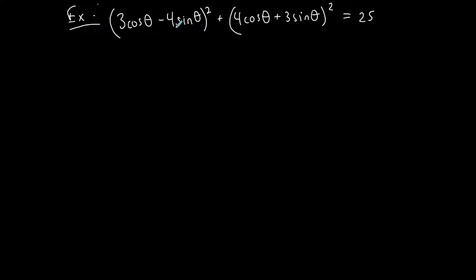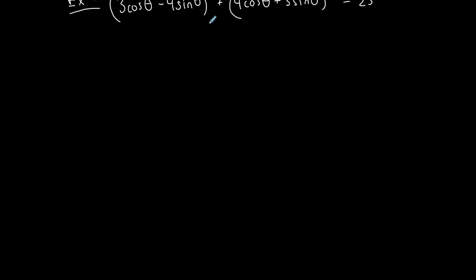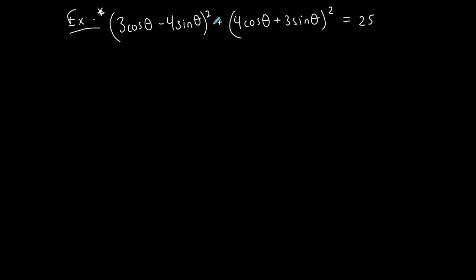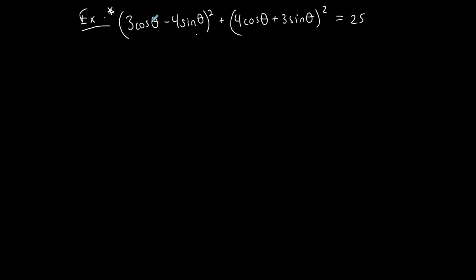I'm going to choose the left-hand side because I have no idea how 25 is going to convert to that, but I can manipulate this side into maybe 25. Everything is already in terms of sine and cosine so I don't need to convert, but I do see that there's algebra — I have a binomial raised to the second power, a perfect square. So I'm going to go ahead and multiply this out.